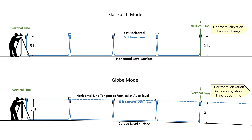This is a graphic I've used in many of my videos to show the difference between the two models. Up above, the horizontal and level line are one and the same, so the horizontal elevation does not change with distance. But down below, the level line curves down from the horizontal, and the rate of change in the horizontal elevation is about 8 inches per mile squared.